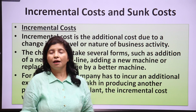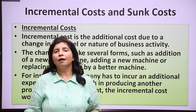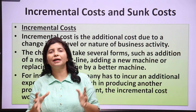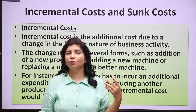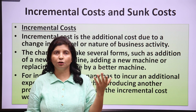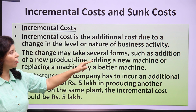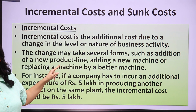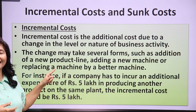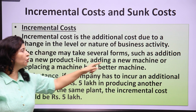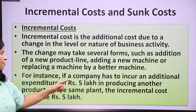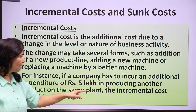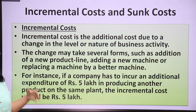Secondly, if you change the nature of the commodity — for example, previously you were producing only simple bread but now you're producing sweetened bread, high-end bread, buns, biscuits, cookies, etc. — you have changed the nature of business activity, and for that you have to invest in new machines and sophisticated tools. The change may take several forms such as addition of a new product line, adding a new machine, or replacing a machine. For instance, if a company incurs an additional expenditure of rupees 5 lakh in producing another product on the same plant, the incremental cost would be rupees 5 lakh.